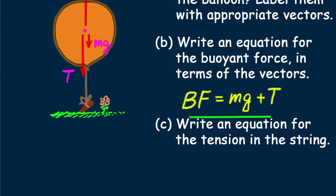Part C, write an equation for the tension in the string. We rearrange and get T equals buoyant force minus MG. Simple enough.